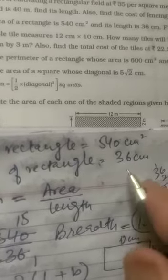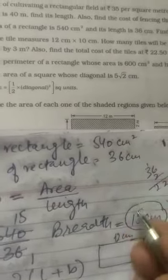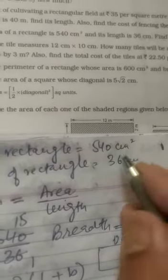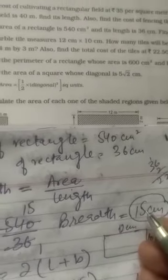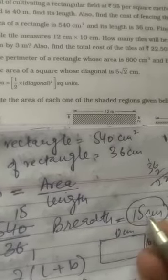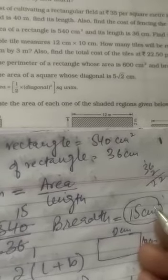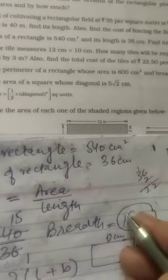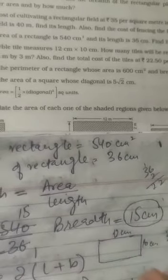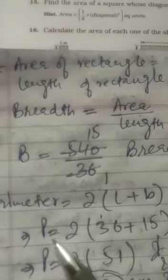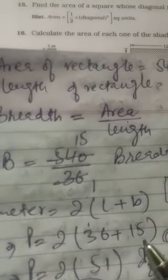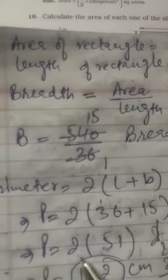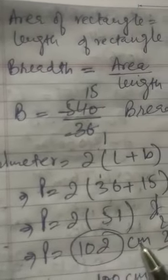Length diya hua tha 36 cm, breadth 15 cm — dono alag alag hain, to hum samajh gaye yeh rectangle hai. Ab perimeter nikalenge. Because this is a rectangle, perimeter ka formula use karenge. Perimeter is equal to 2 × (length + breadth). Yahan pe: perimeter = 2 × (36 + 15) = 2 × 51 = 102 cm.